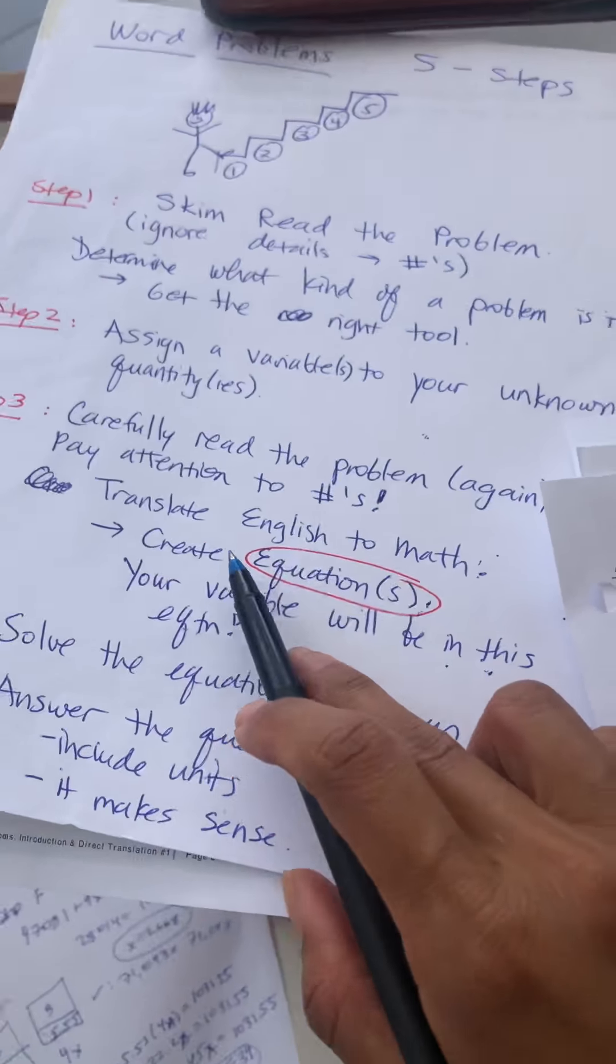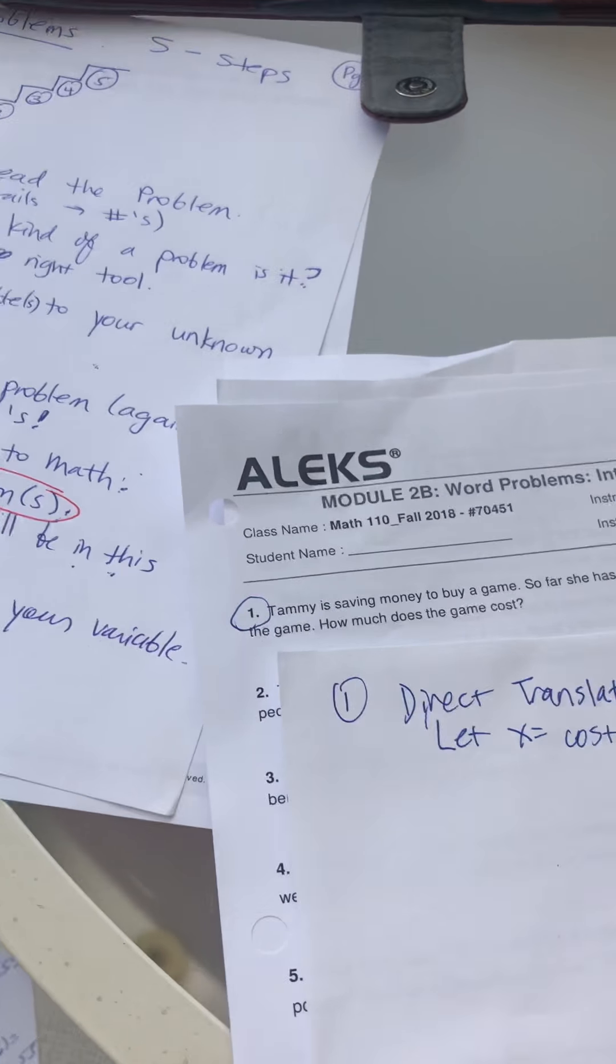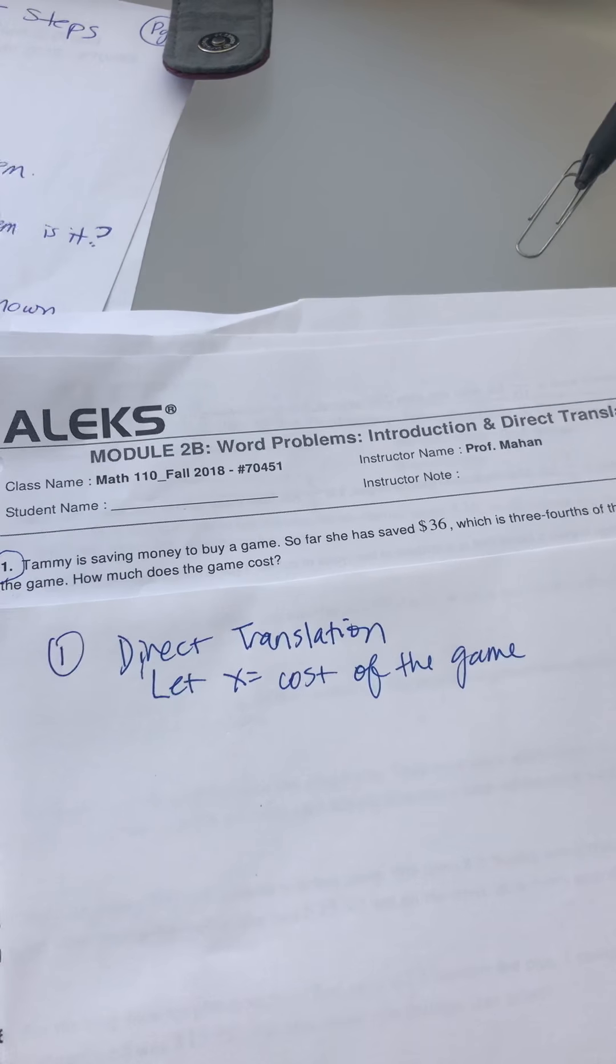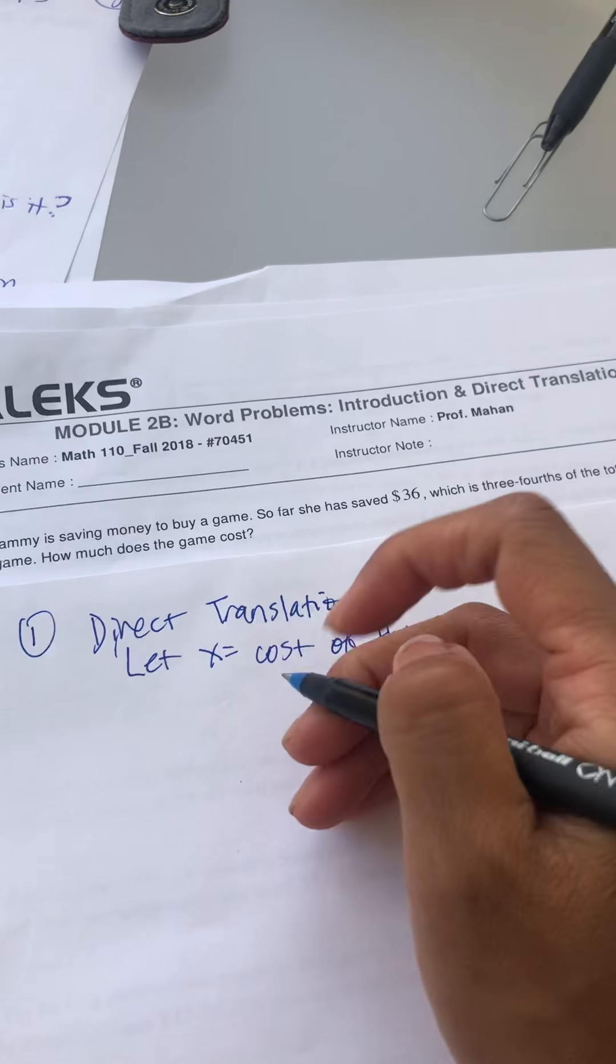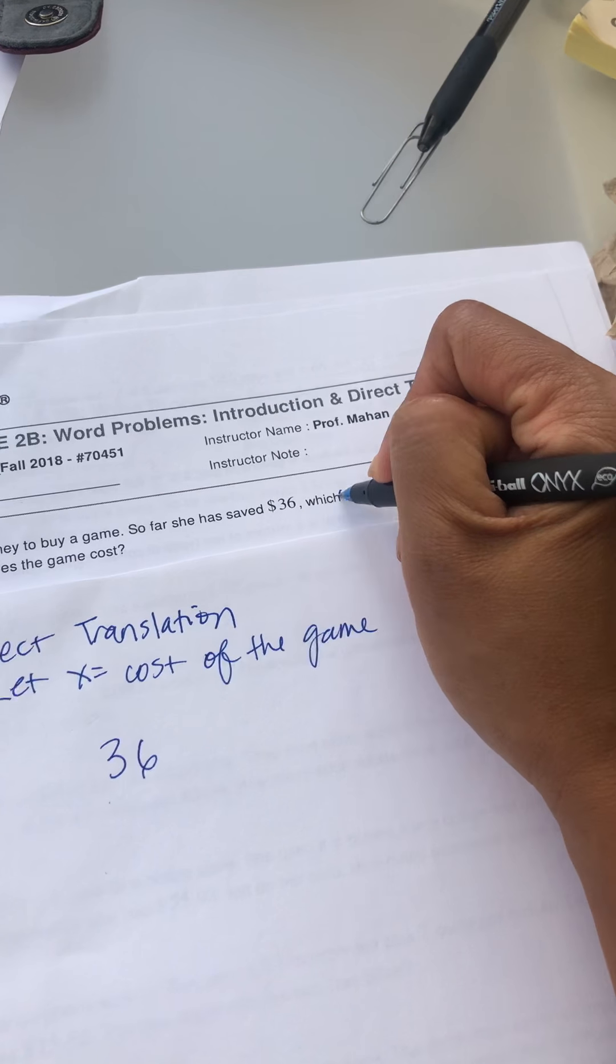So now step three is carefully read the problem, translate English to math, and create equations along the way using the letter x. So Tammy is saving money to buy a game. So far she has saved $36, so 36 is how much she saves. The word 'is' means equal, so we translate English to math: 'is' means equal.